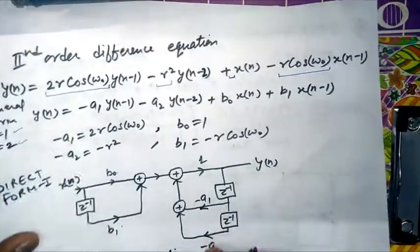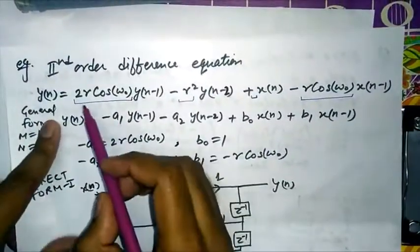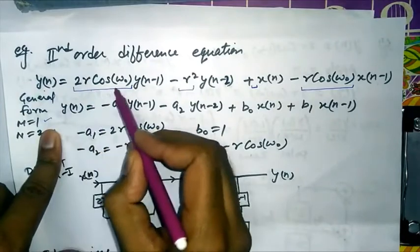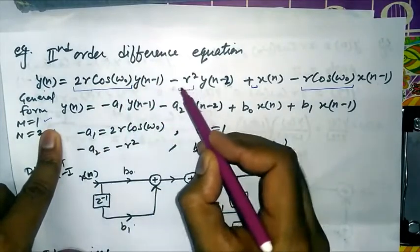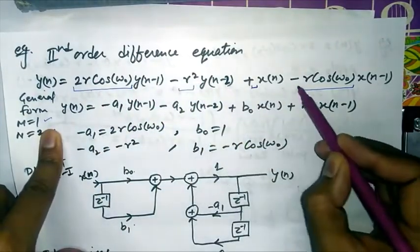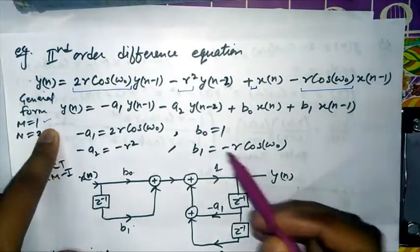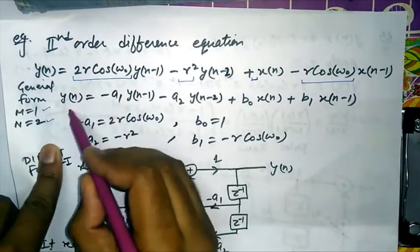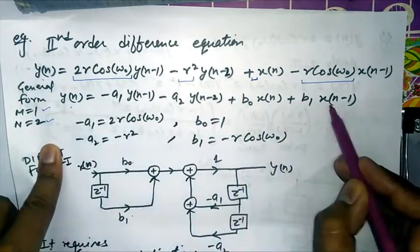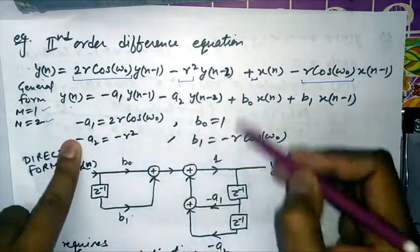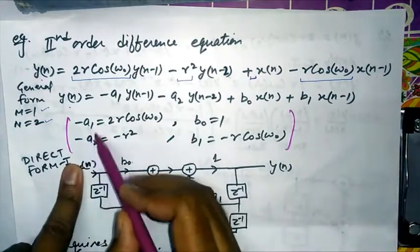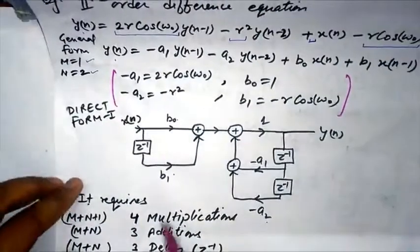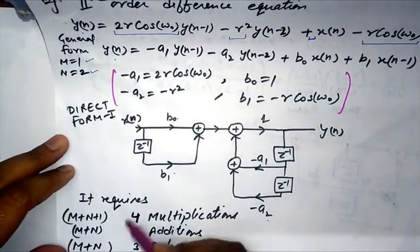Now for an example — a second-order difference equation, the same example used for Direct Form 1 in the last video: Y(n) = 2r·cos(ω₀)·Y(n-1) - r²·Y(n-2) + X(n) - r·cos(ω₀)·X(n-1). Comparing with the general form, we find the coefficients: -a1, -a2, b0, b1, and we draw the Direct Form 1 structure.